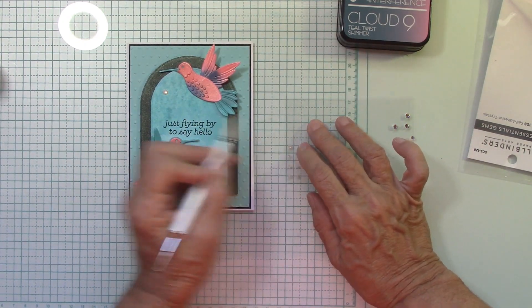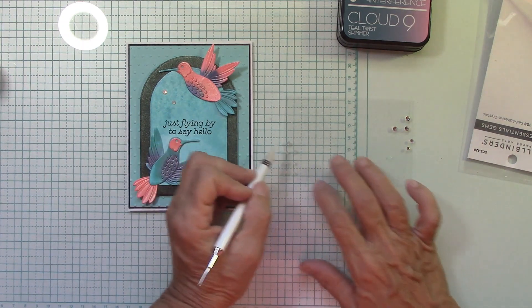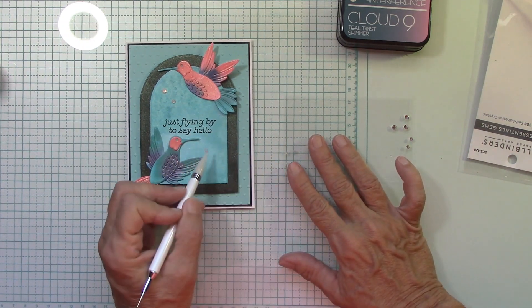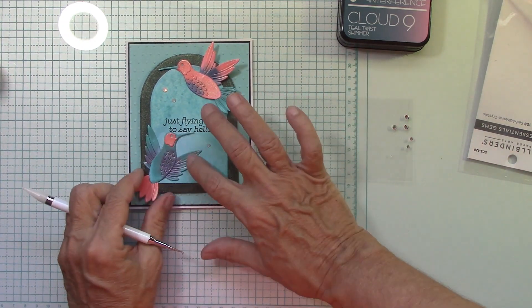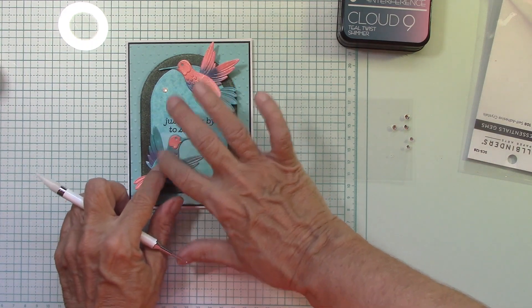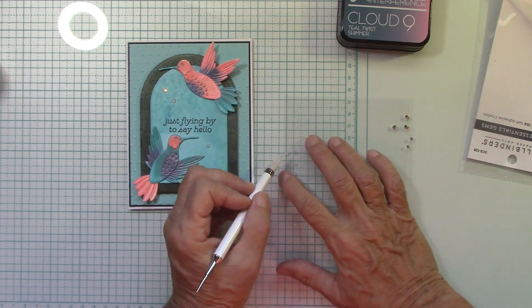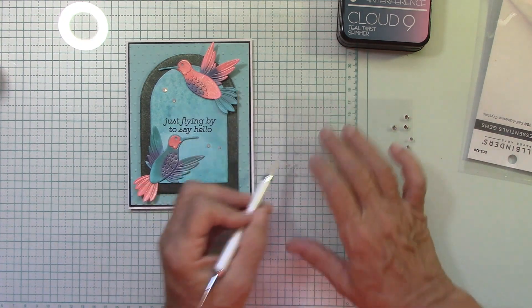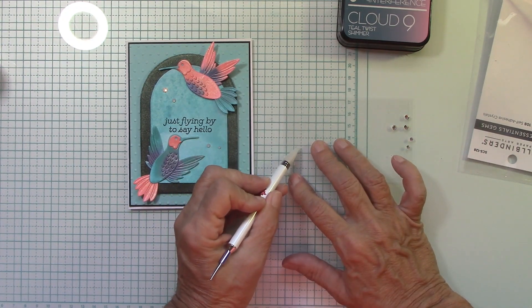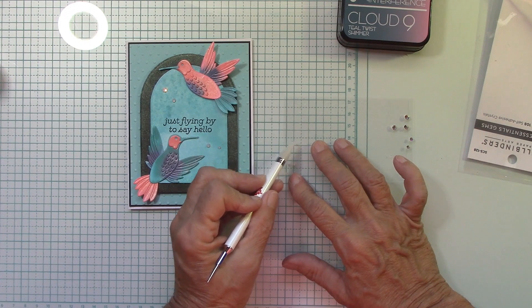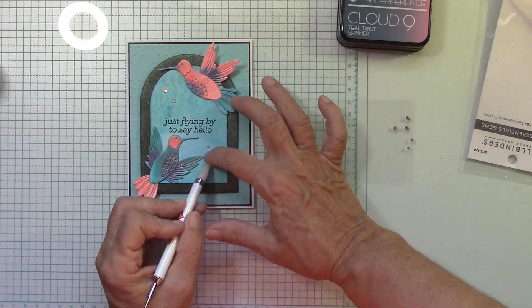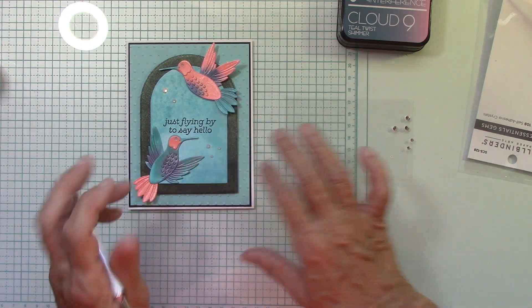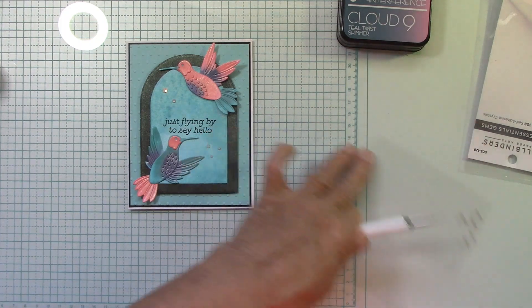I'm going to put two here and I'm going to put three here. Oh, you moved. There. Sit. And one. Two. And there we go. This is our card for today.